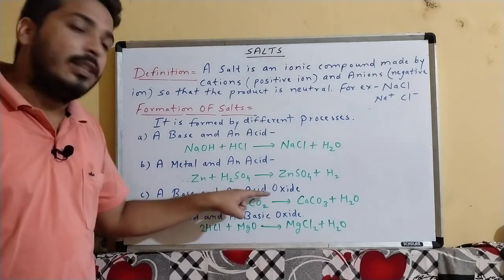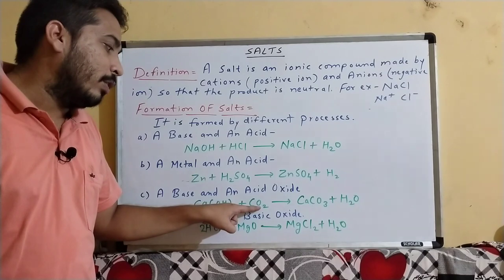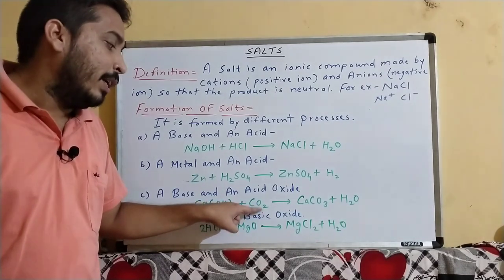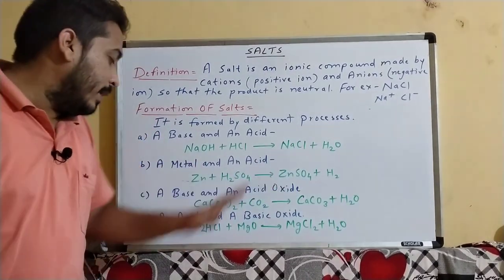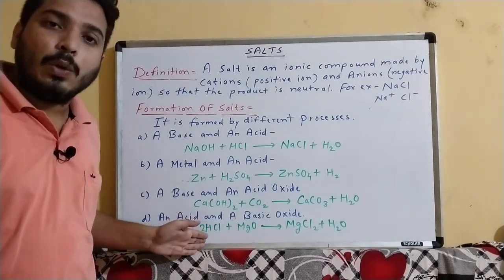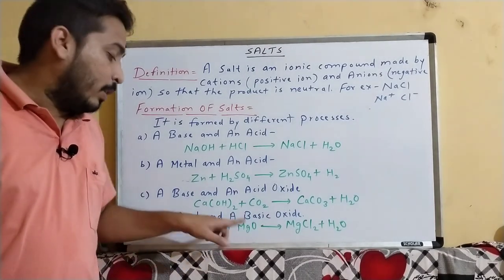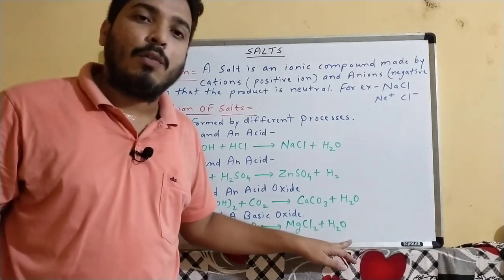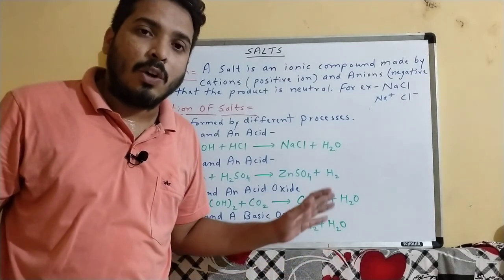Next is a base and an acidic oxide. For example, calcium oxide reacting with carbon dioxide produces salt plus water. And lastly, an acid and a basic oxide: hydrochloric acid reacting with magnesium oxide gives magnesium chloride plus water. These are the different processes of formation of salt. You can take a screenshot of this content.